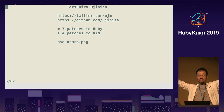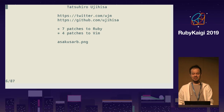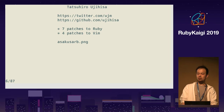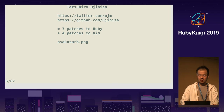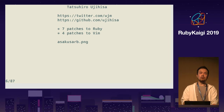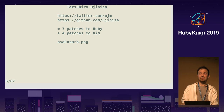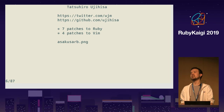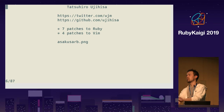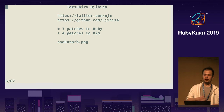Hello everyone. I'm Tatsuhiro Ujisa. Nice to meet you — just call me Uji or Ujihisa. I'm definitely not a strong Rubyist; I'm probably the weakest Rubyist at RubyKaigi.